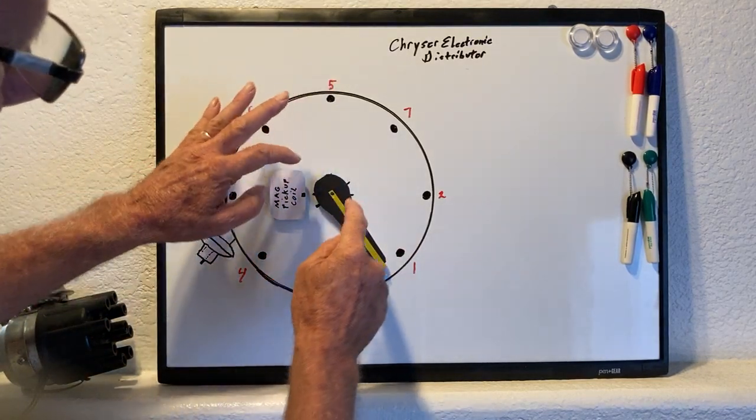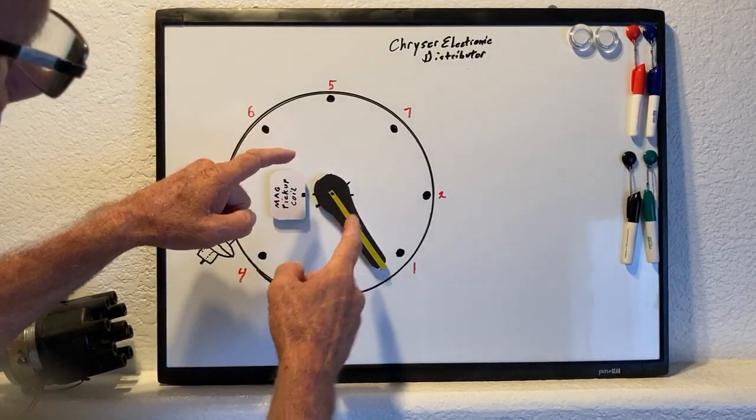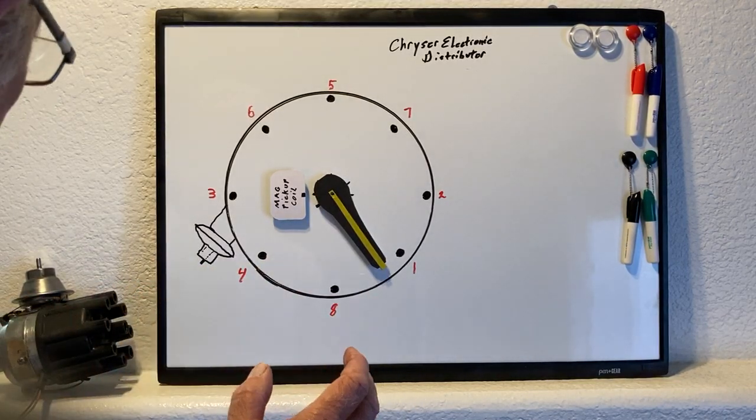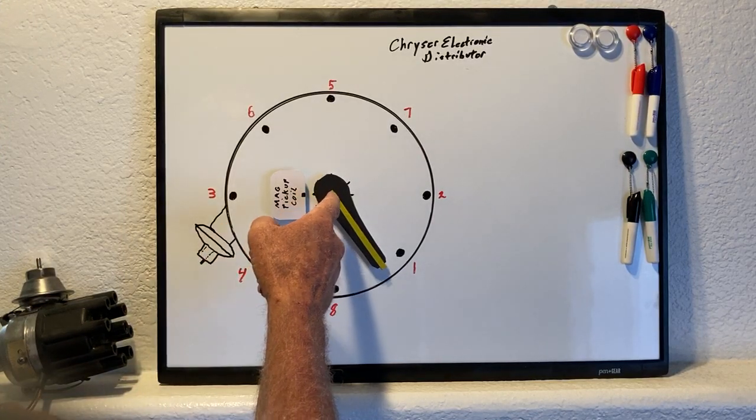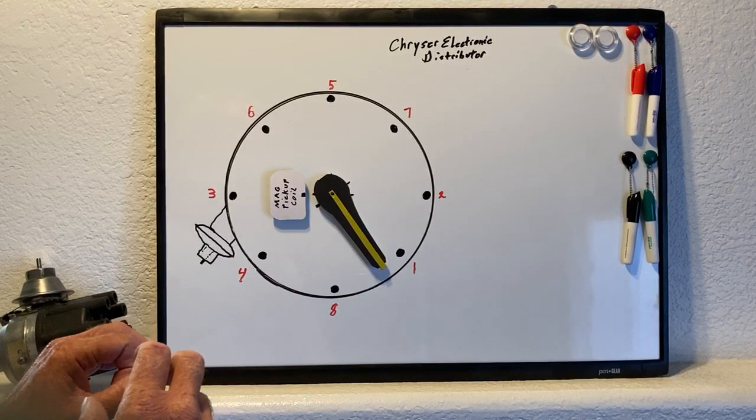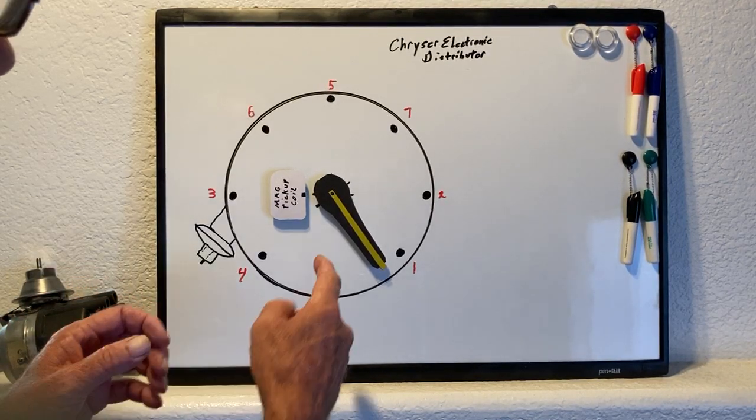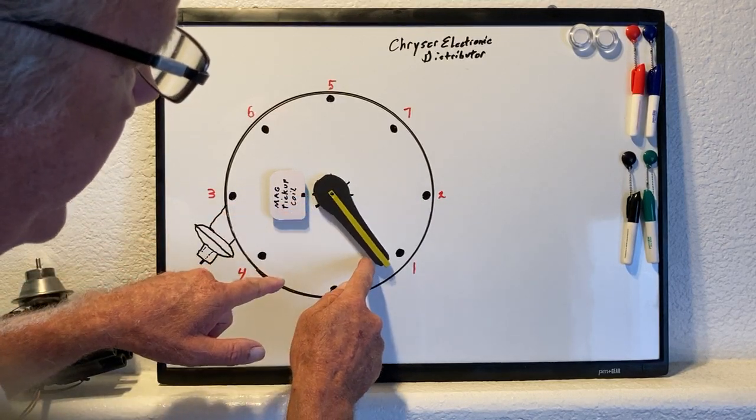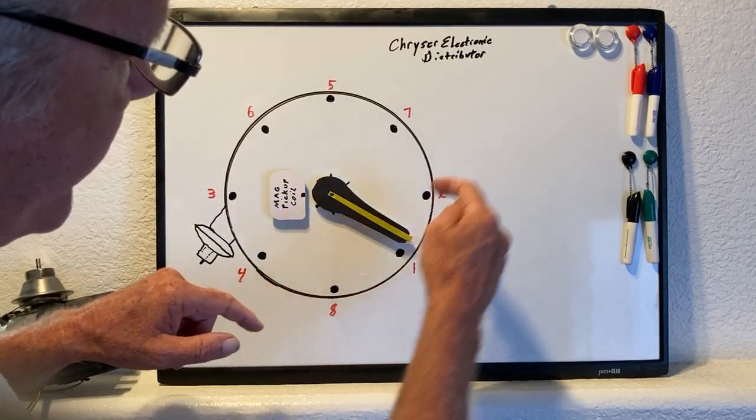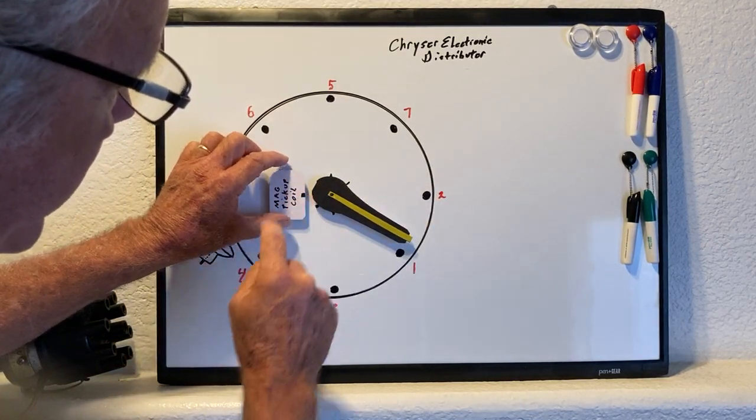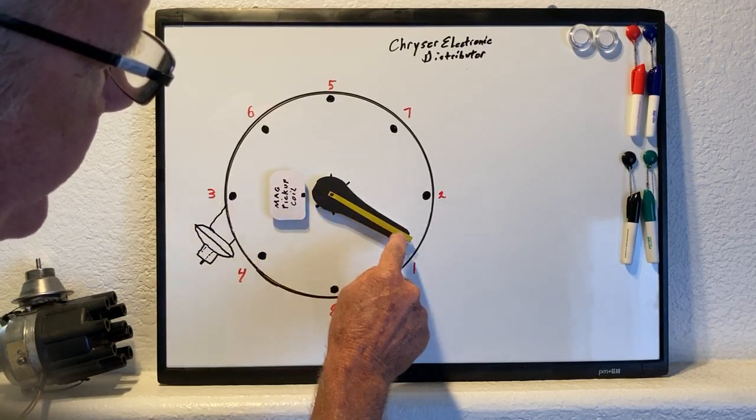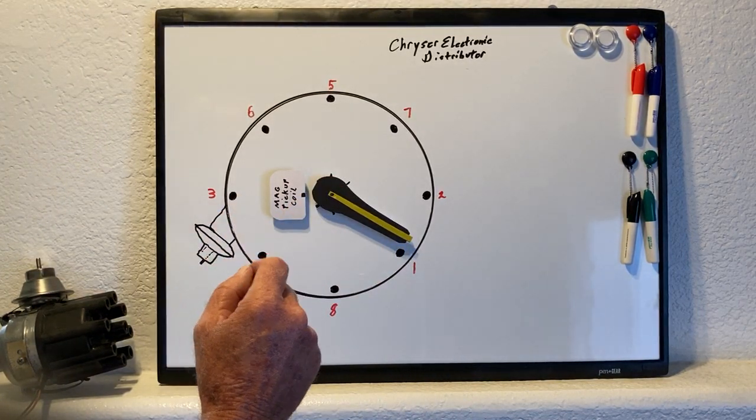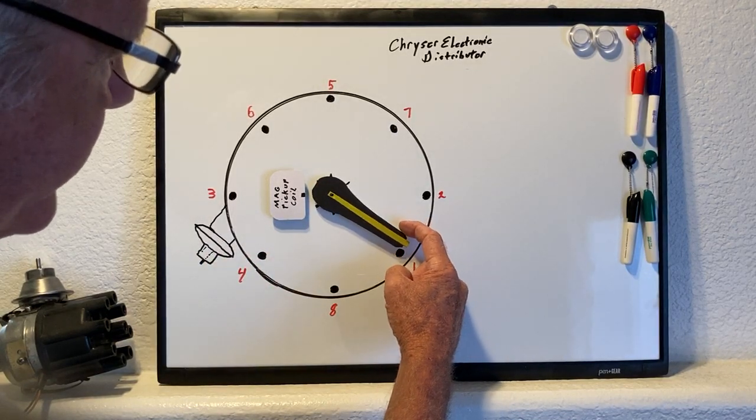The rotor and the reluctor turn together. Remember from my first video, the distributor bottom shaft and top half where this is mounted are not solidly connected. The flyweights inside the distributor will advance this as RPMs go up. If our rotor is going this way and these vanes line up right here, that's going to fire the coil and a spark is going to jump from that corner to this terminal inside your cap. That's the phasing being off. What we'd really like to have is that real close to that.